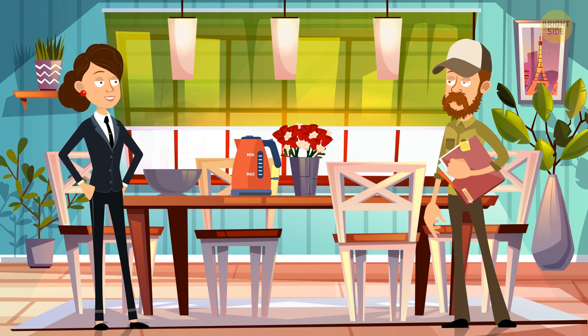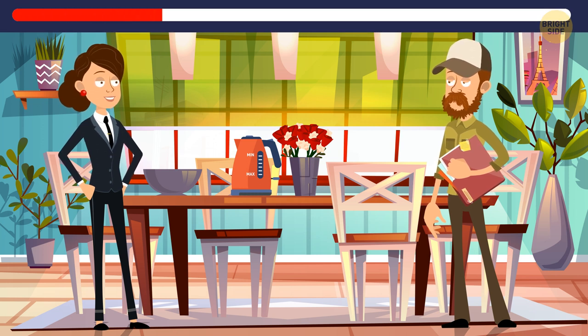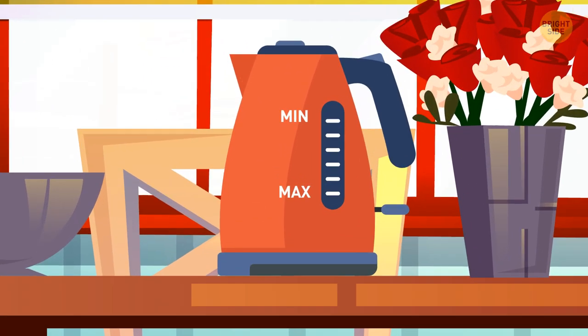Nancy took Josh to the office kitchen. Can you see anything weird on the table? Take a look at the electric kettle. Min and Max are on the opposite sides.